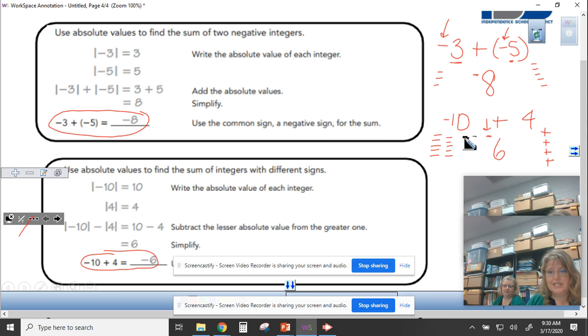What we're really doing in this situation is we're simply taking 10 minus 4 because of the opposite signs and make sure we have that negative flag flying. So again, below this you will have some practice problems for adding integers when there are opposite signs.